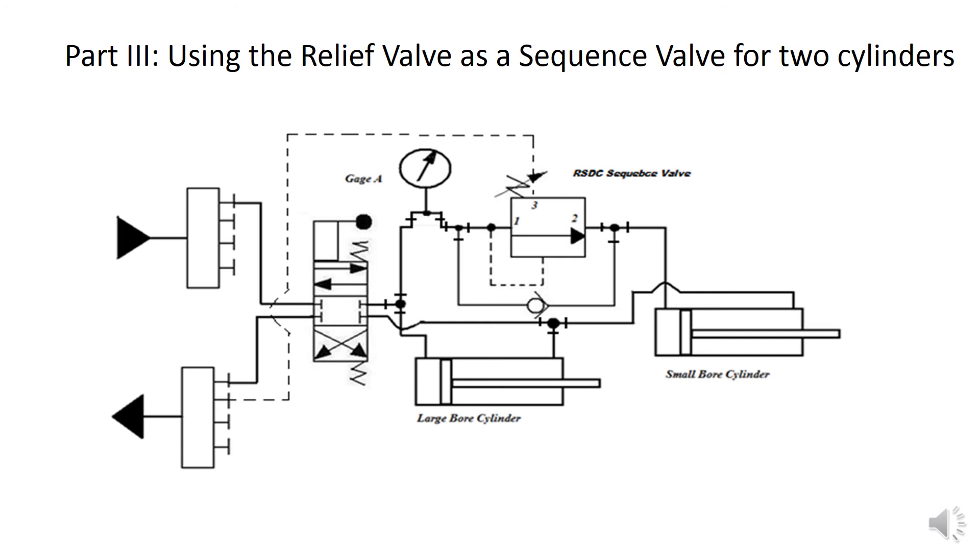I would like to point out that there is no component enclosure around this symbol, meaning that the check valve was added. If the check valve were installed backwards, we would have a problem in this circuit. And the problem simply would be that the small bore cylinder, although it might extend, and it would, it would not be able to retract.